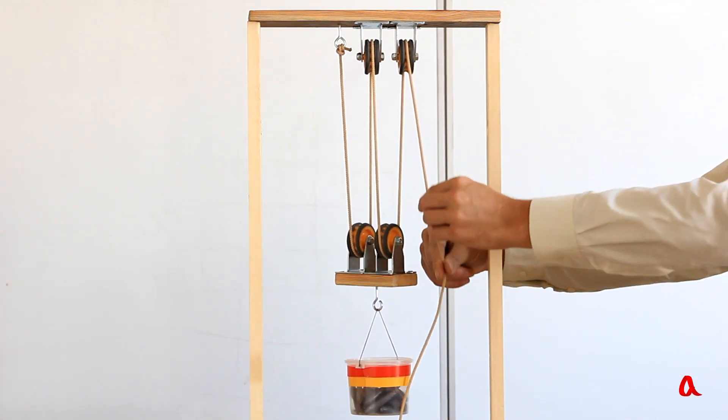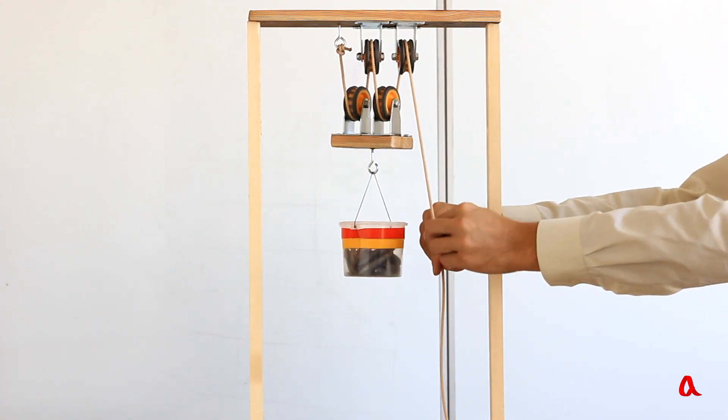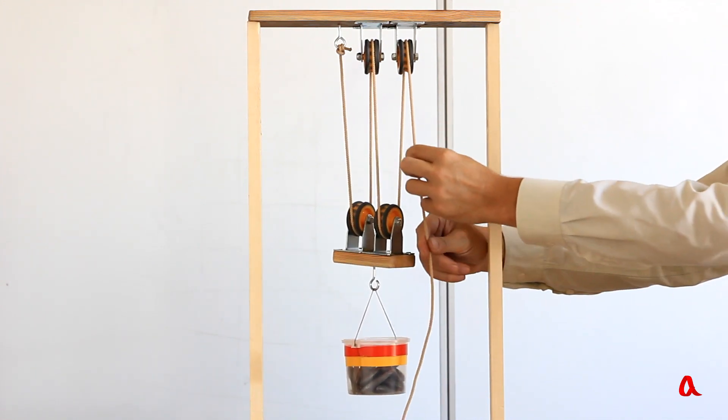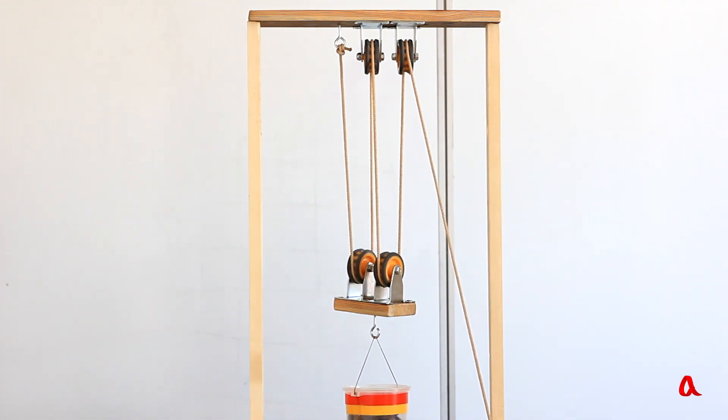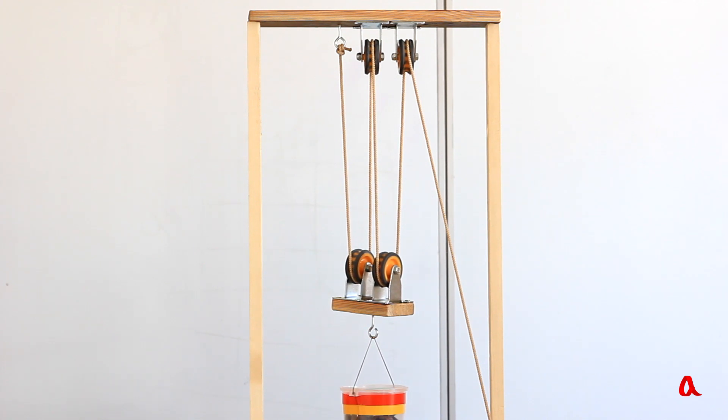What mechanical advantage does this block and tackle provide? The weight of the load is equally distributed over all the four ropes, so we get a four times advantage in force. If we add another pair of blocks, the weight will be distributed over six ropes and the mechanical advantage will rise to six times. Generally, in this type of block and tackle construction, the mechanical advantage always equals the number of blocks.